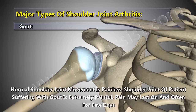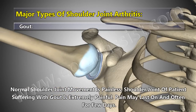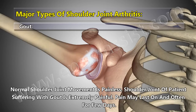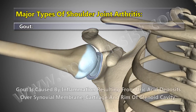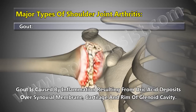Normal shoulder joint movement is painless. The shoulder joint of a patient suffering with gout is extremely painful, and pain may last for a few days. Gout is caused by inflammation resulting from uric acid deposits over the synovial membrane, cartilage, and rim of the glenoid cavity.